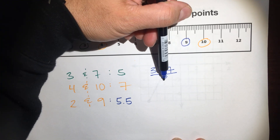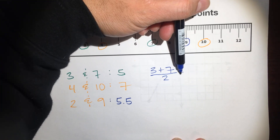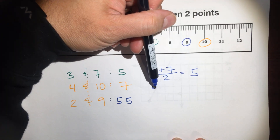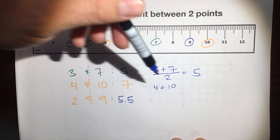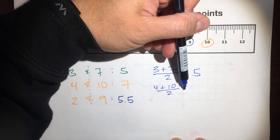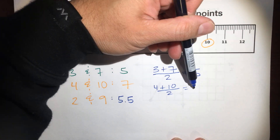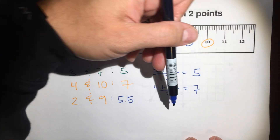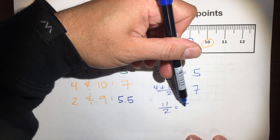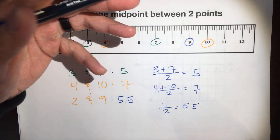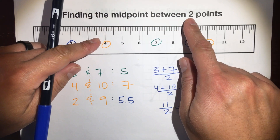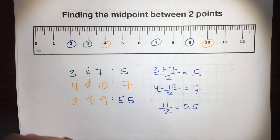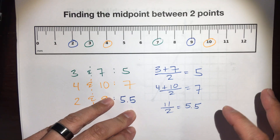Three plus seven — there are two numbers, so divide by two. Three plus seven is ten, divided by two is five. If we find the average of four and ten: four plus ten is fourteen, divided by two is seven. And two and nine: eleven over two is 5.5. All you're doing when you have two points and want the midpoint is find the average. That's it — you find the average to get the midpoint.